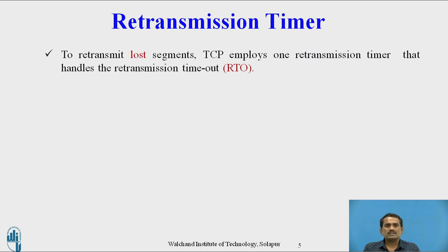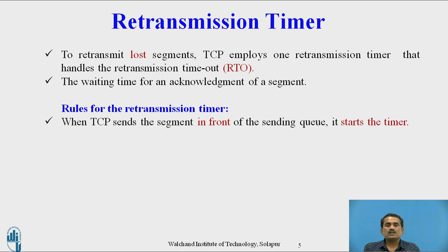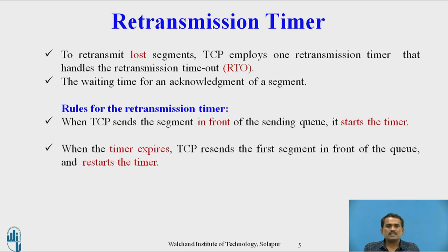The retransmission timer is used to retransmit lost segments in TCP. TCP employs one retransmission timer that handles the retransmission timeout, referred to as RTO, which means retransmission timeout. The waiting time for an acknowledgement of a segment is the RTO. The first rule is: when TCP sends a segment from the front of the sending queue, it starts the timer.